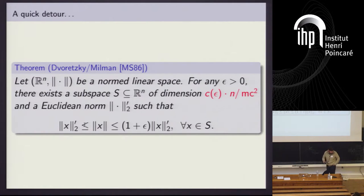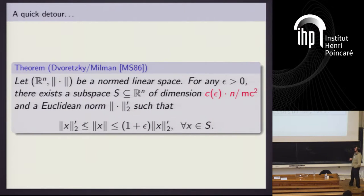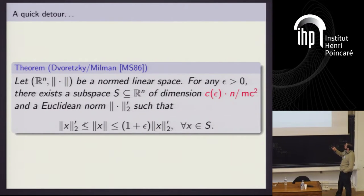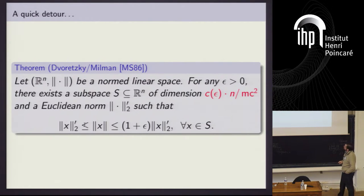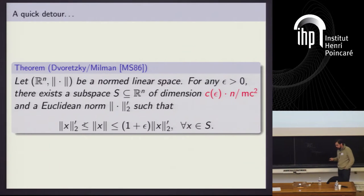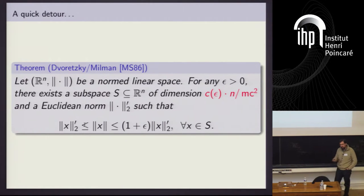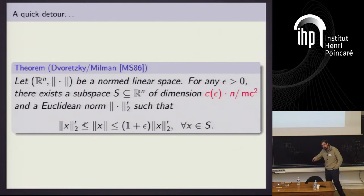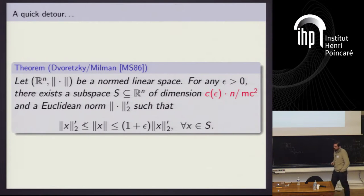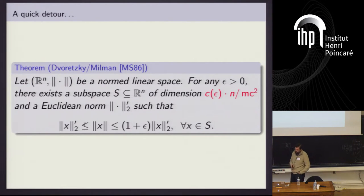We're not the first people to talk about this ratio. Here's an example where it's important for the theory of embeddings: Dvoretzky's theorem, a famous theorem from analysis, says that if I have an n-dimensional normed linear space and want to embed L2 into it, then the largest dimension d for which I can embed L2 with 1+epsilon distortion is like n divided by this ratio squared. So mc squared is the important quantity from that.